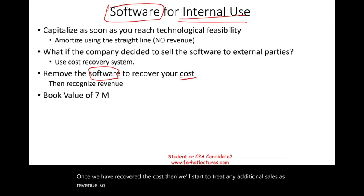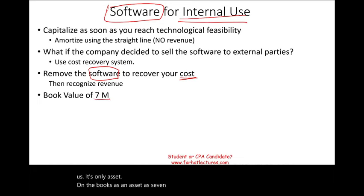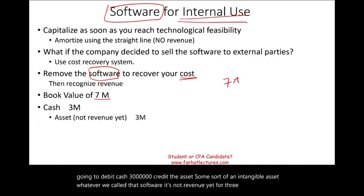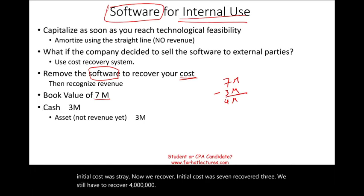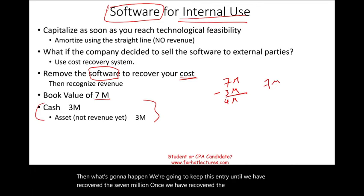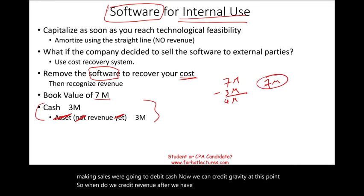Let's take a look at a quick example. Let's assume the book value of the software is $7 million — that's how much it cost us, recorded as an asset. When we sell the first $3 million, we debit cash $3 million and credit the intangible asset for $3 million — it's not revenue yet. The initial cost was $7 million; we recovered $3 million, so we still have $4 million to recover. We keep this entry until we have recovered the full $7 million. Once we've recovered the $7 million and continue making sales, we debit cash and credit revenue. Revenue is recognized only after we've recovered our $7 million cost.